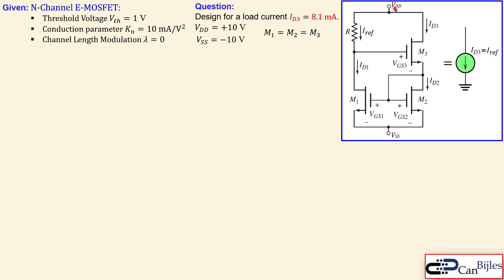For this circuit we have two DC voltage sources: VDD and VSS, so we have plus 10 and minus 10 volts. We would like to design for a load current ID3 of 8.1 milliamps. As discussed before, ID3 is very close — almost equal — to IRF, since the gate current is essentially zero.